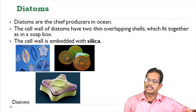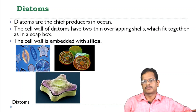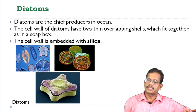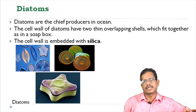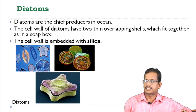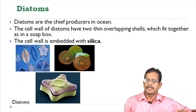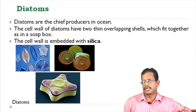Diatoms are the chief producers in the ocean. Diatoms have a specialized cell wall structure. The cell wall consists of two thin overlapping shells that fit together as in a soap box — there are two lids.